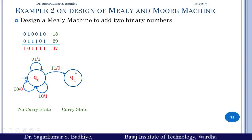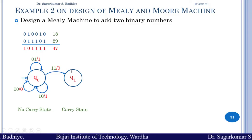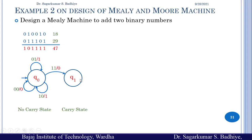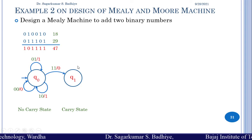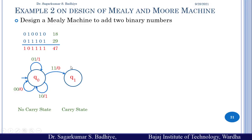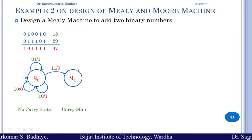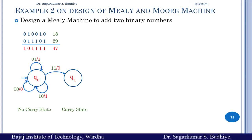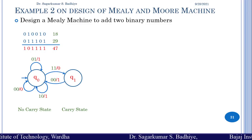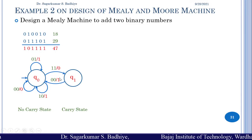In q1, we can again have four input combinations. If the input in q1 is 00, there is already a carry, so 0 plus 0 plus the carry gives output 1 with no further carry. Therefore, on input 00 in q1, we produce output 1 and transition to q0, the no-carry state.